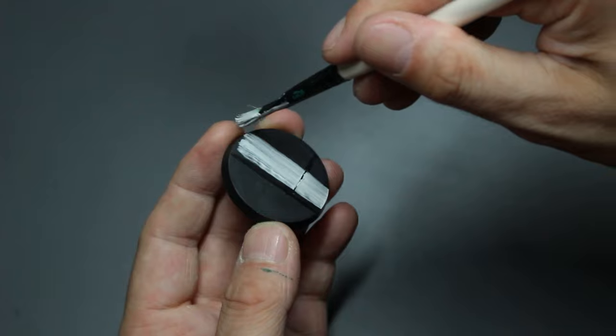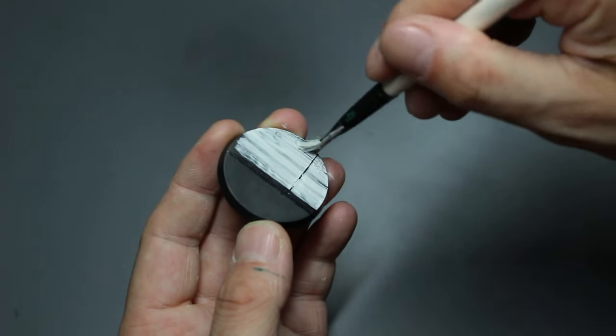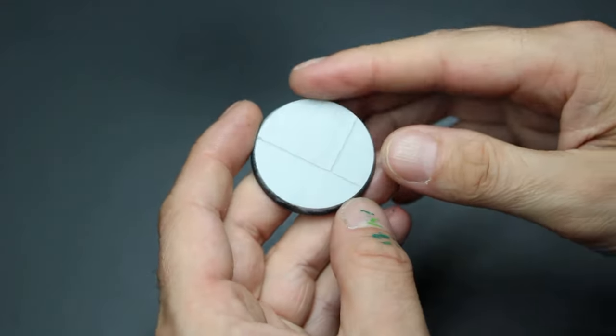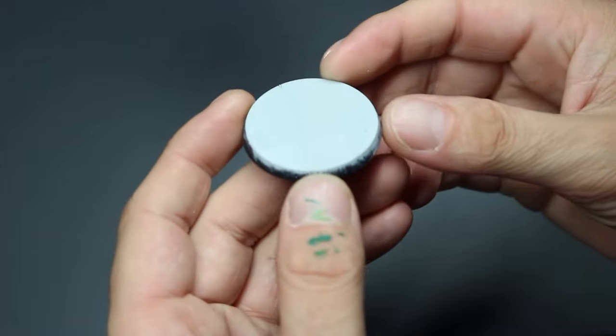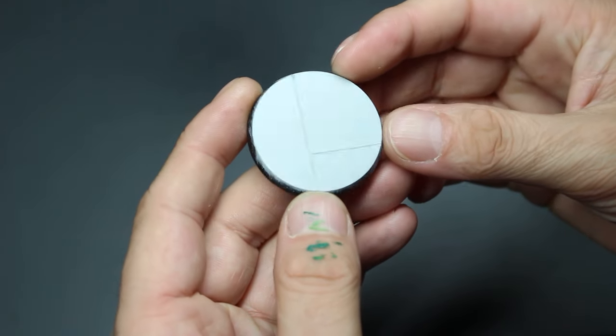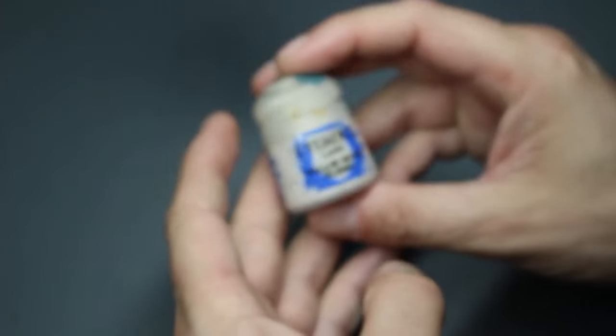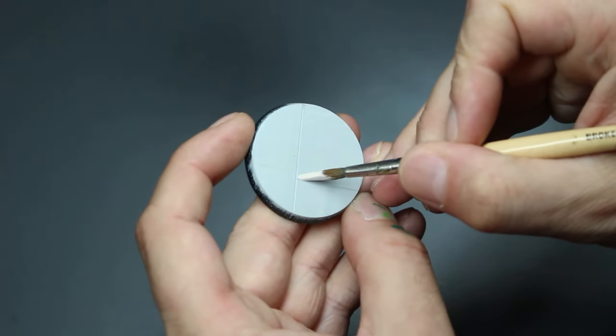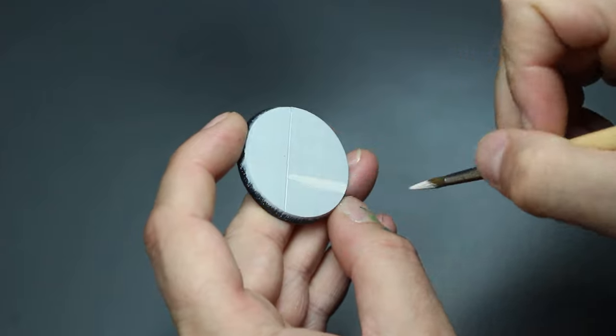What we'll do is give it a quick base coat of Corax White. This is purely just a base, so you want about three very thin coats. Try and keep it nice and smooth. And the color we're going to be putting over the top is quite pale, so Corax White works really well as a base.